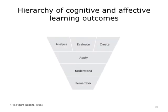In this diagram, you can see the hierarchy of cognitive and affective learning outcomes. Starting at the bottom of this pyramid is 'remember,' which is basic knowledge, moving up to understanding, application of knowledge, and at the top level: analyze, evaluate, and synthesize — or create new knowledge.